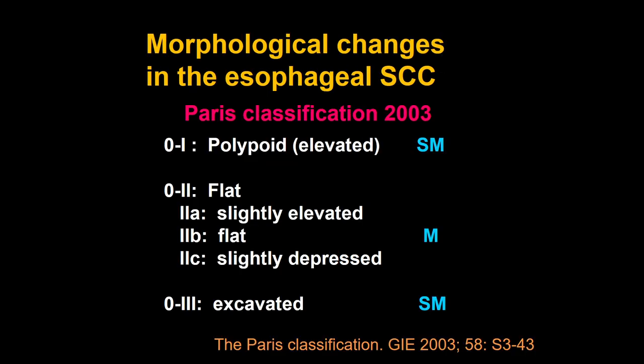Everybody knows this very simple morphological classification of early stage cancer — the Paris classification. There are types 2A to 2B to 2C: very subtle elevation or depression of the surface. Such regions are generally linked to the mucosal region. Once a region is very protruded or very excavated, there is more risk of deep invasion.